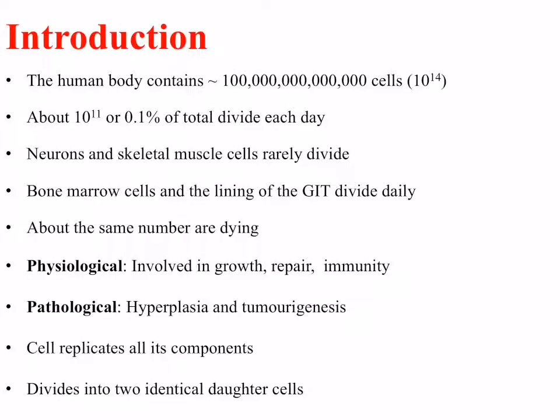Neurons and skeletal muscle rarely divide. In fact, in some instances, these have become post-mitotic, meaning they no longer undergo mitosis or cell division. Cells that do undergo a lot of cell division include cells of the bone marrow, which are responsible for creating blood cells, and also the lining of the gastrointestinal tract — the epithelial cells divide daily. About the same number of cells are dying, and we'll be talking about cell death, and in particular apoptosis, in the next lecture.